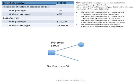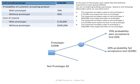If I do prototype, the table tells me there's a 70% probability the real product will pass acceptance testing, with rework costs of $0. If there's a 70% probability the real product will pass, there must be a 30% probability the real product would fail acceptance testing. The table tells us the cost to rework would be $20,000.